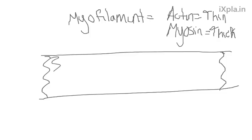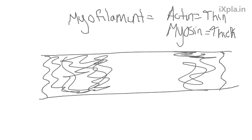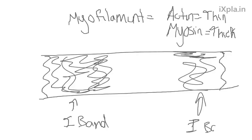In between the Z-disc you have something called the I-band. I stands for isotropic. The I-band contains just actin — that's important to know. Just actin.